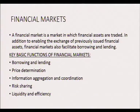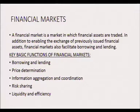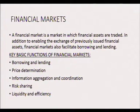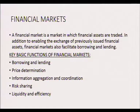Any economic sector has different markets. Here we concentrate on financial markets. A financial market is a market in which financial assets are traded. In addition to enabling the exchange of previously issued financial assets, financial markets also facilitate the process of borrowing and lending. The key basic functions of a financial market include: borrowing and lending, price determination, information aggregation and coordination, risk sharing, liquidity, and efficiency. You should be able to understand and explain all these functions.